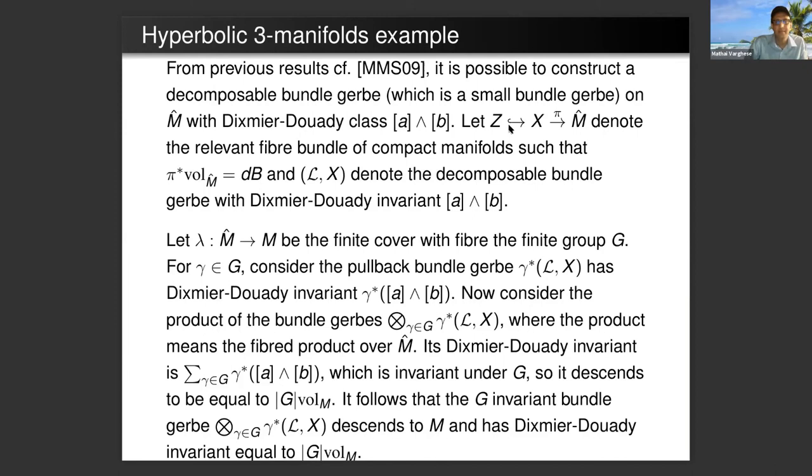Since M is compact, by Poincare duality there's a closed two form B whose cohomology class is non-zero and is a generator of H^2. A wedge B is a volume on M-hat, so the volume is a generator of H^3 of M-hat with integer coefficients. M-hat is now decomposable, the volume is decomposable, and we can essentially do index theory there and it works.